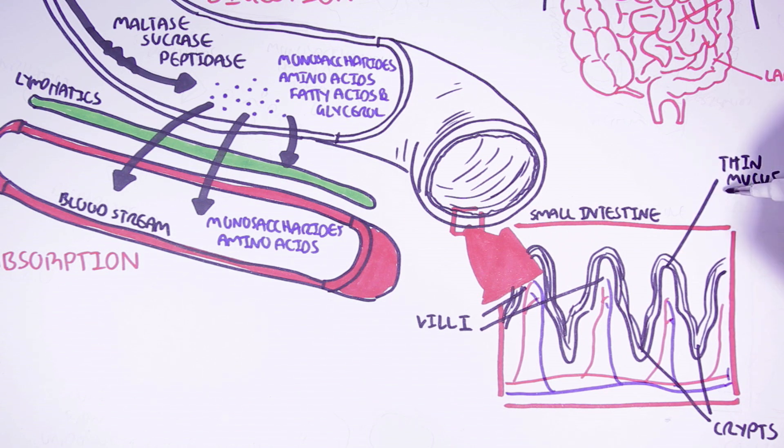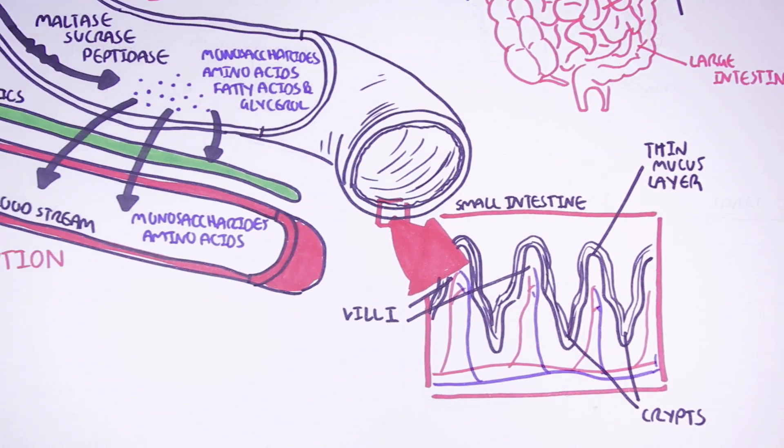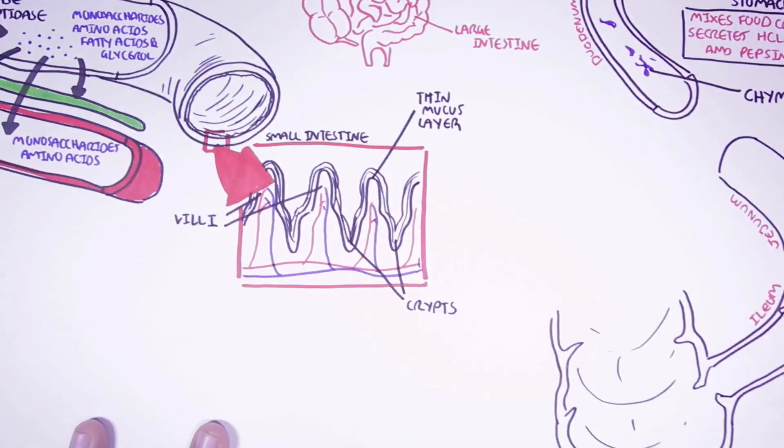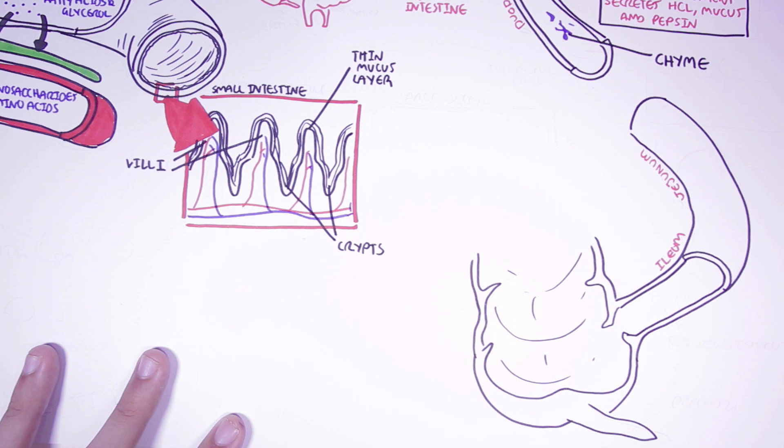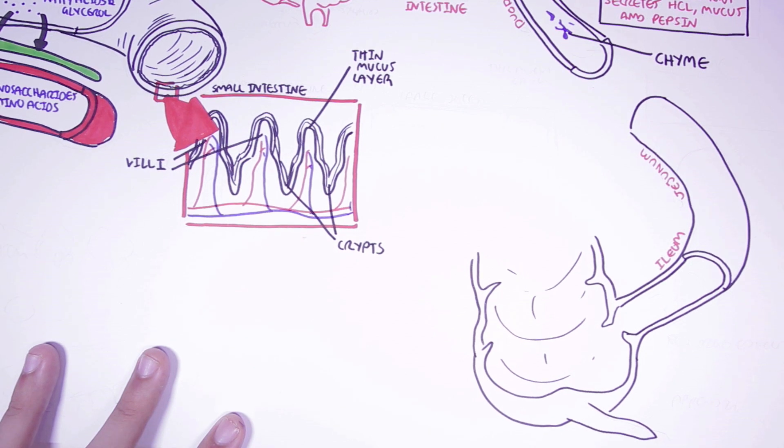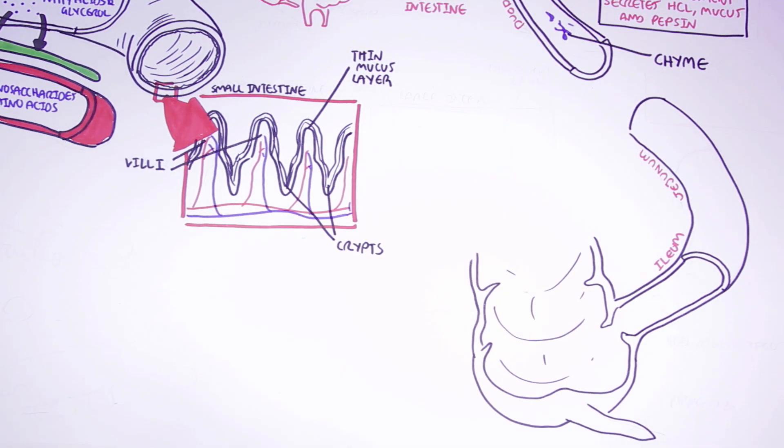The small intestine also has a thin layer of mucus. Now we move on to the large intestine, also referred to as the colon. The main function of the large intestine is to absorb water and ions, as well as storing and transporting waste that will be expelled by the body.